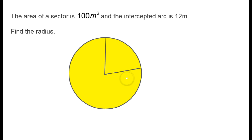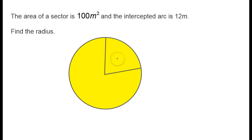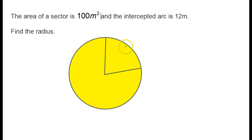This problem is a little bit tricky. We are given the area of a sector — the area of this slice of the circle — and we are given the length of the intercepted arc, and we're being asked to find the radius.